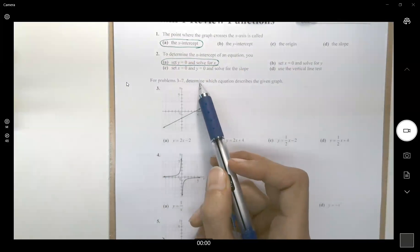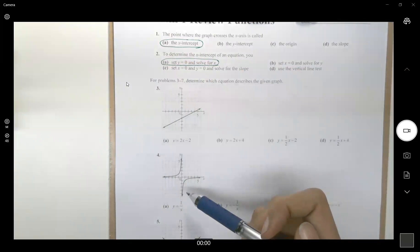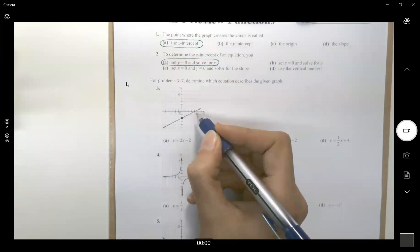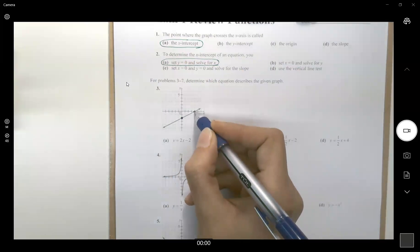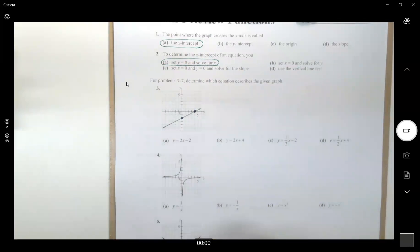For question 3 to 7, determine which equation describes the given graph. Well, here you can take two points on your graph, the first point and the second point, and start writing the equation of the line passing through these two points.